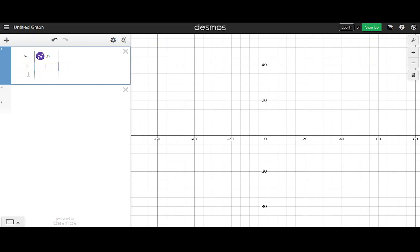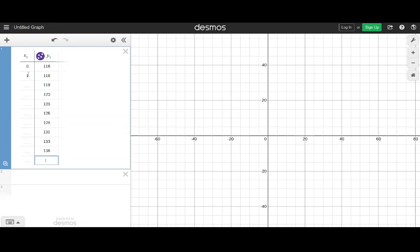So then under the first y value, I'm going to enter 116. And then under the first or next x value, I'm going to enter 118 and then 119 and so on. And then on the x values, I have to finish entering.